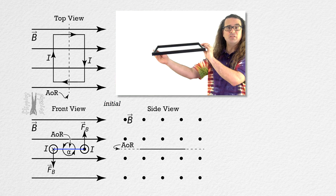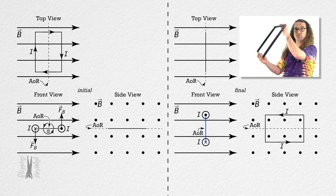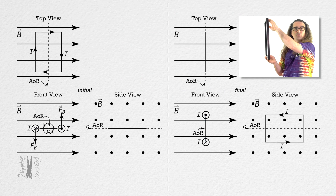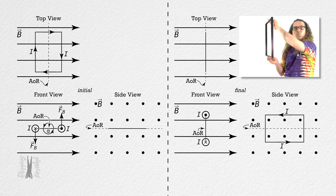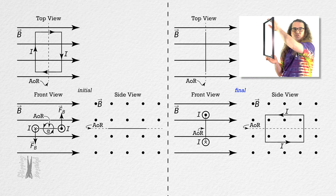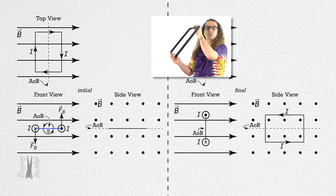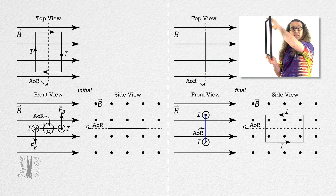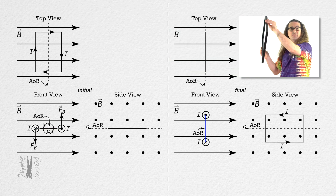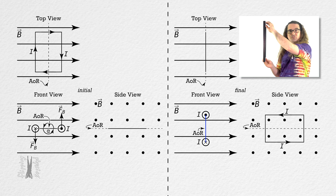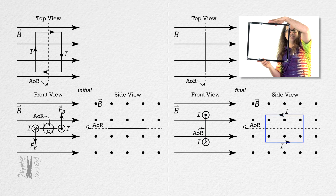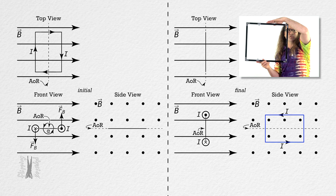After the loop has rotated 90 degrees, we arrive at the final position of the rectangular conducting wire loop. In the front view, the wire loop rotates from the initial position to the final position. In this final position, in the top view the loop looks like a line, in the front view the loop also looks like a line, and in the side view you can see the rectangular shape of the loop.